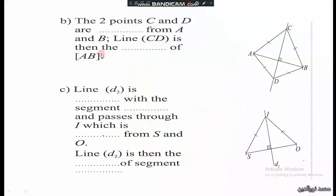Part B: The two points C and D - here we have point C and point D - they are equidistant from A and B. Point C is equidistant from A and B, also D is equidistant from A and B.